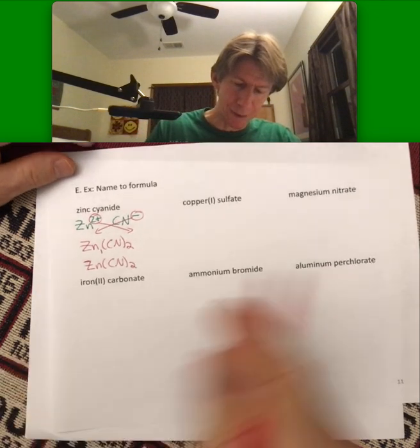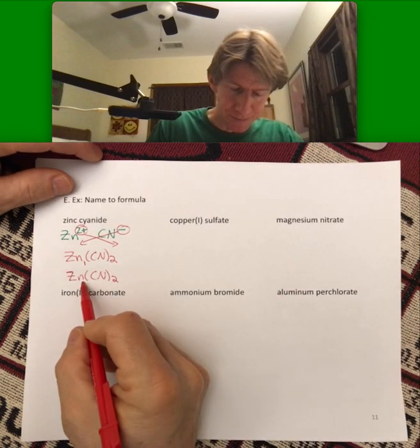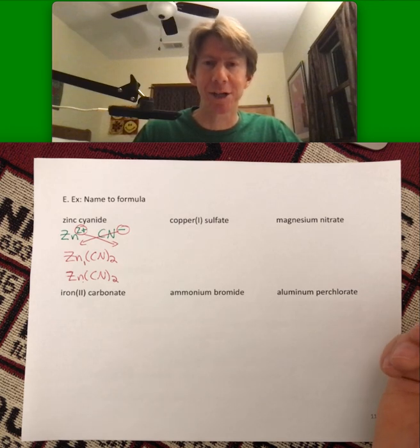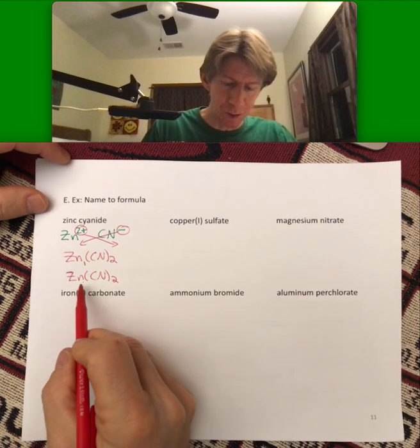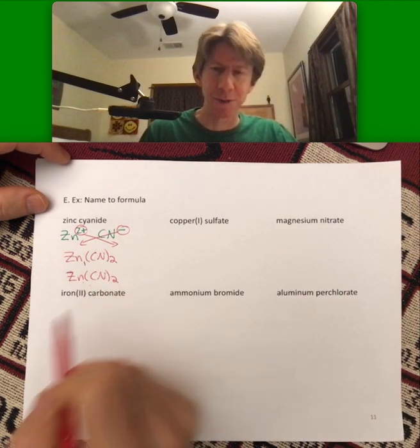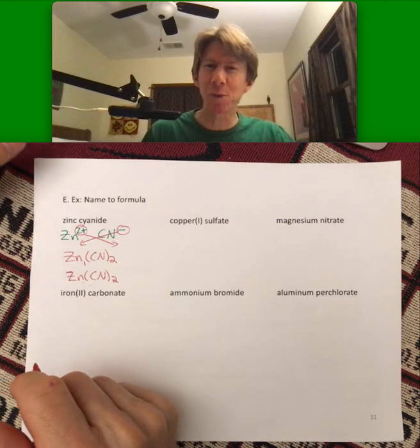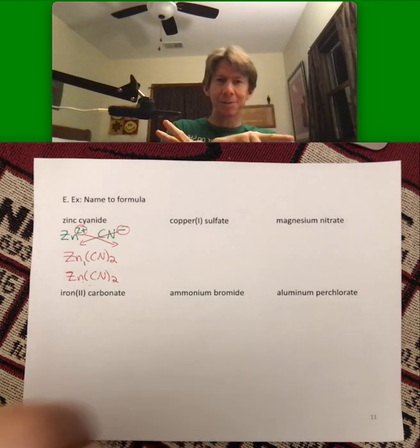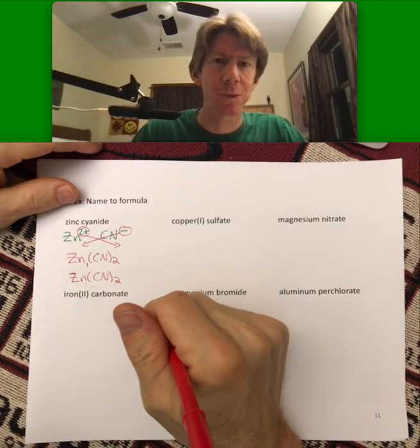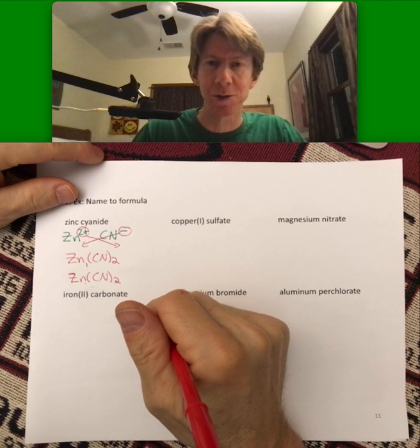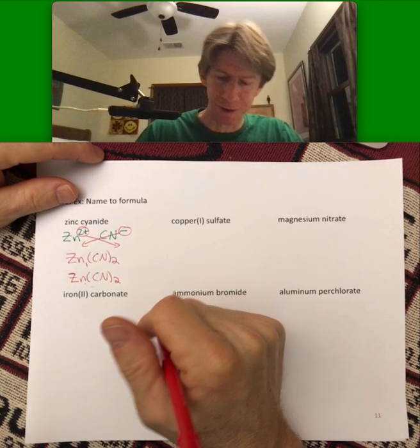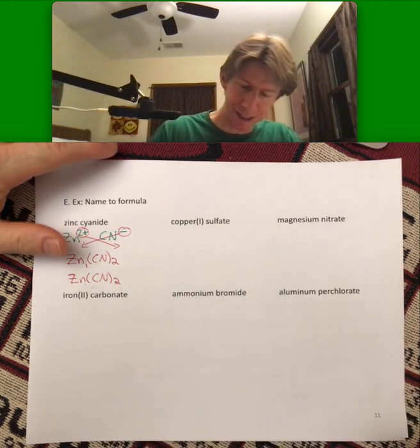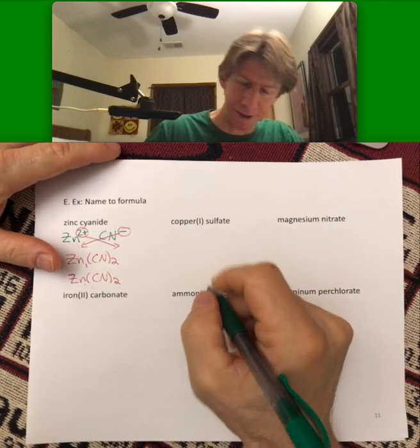Now, whenever you do the crisscross method, which is really just a sort of a shortcut method for canceling the charges, do make sure that you have the smallest numbers possible here. Every once in a while, you'll end up with two plus and two minus charges. And if you bring them down, you'll end up with twos and twos down there, which you'll need to simplify. I don't know if we'll see that in these examples, but let's see. We'll work at least three of them.